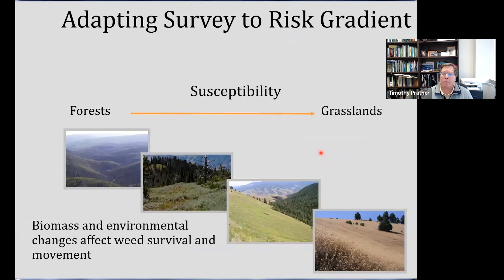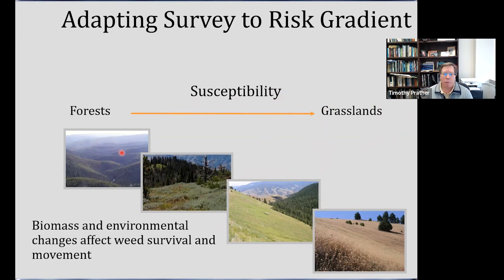Depending on where your property sits, it can really make a difference in how easily invaded your area is. The higher you are in elevation, the lower the number of species that are going to be a problem — that doesn't mean there aren't problem species, just fewer to worry about. Grasslands are going to be much more invadable. As you go from a drier, lower biomass site into forested areas, those are less susceptible to invasion. Just depending on where you sit on the landscape can really help determine how easily invaded your particular place is.